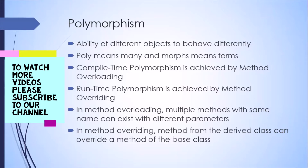In method overriding, a method in the derived class overrides a method from the base class. You are redefining the implementation in the derived class that was already defined in the base class. Method overloading can have methods lying in the same class, but in method overriding both methods have to be in different classes — one in the parent class and one in the child class. This is also a very important interview question about the difference between method overloading and method overriding.